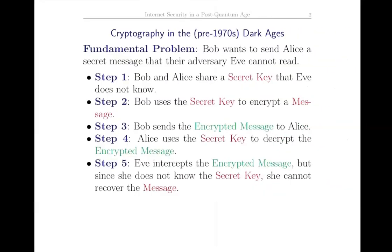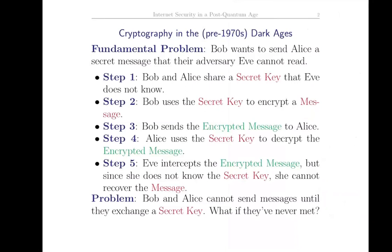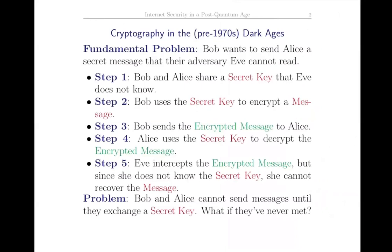So this is what they do. First, Bob and Alice share some secret key. Then Bob uses the secret key to encrypt his message. Bob sends the encrypted message to Alice, who decrypts it, also using the secret key. And Eve, even though she can intercept the encrypted message, can't read it because she doesn't know the secret key.